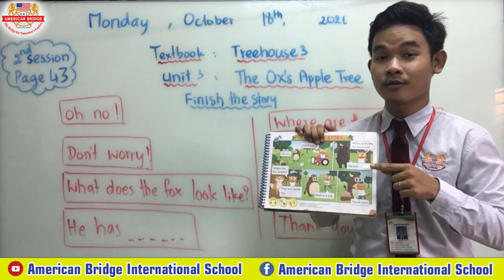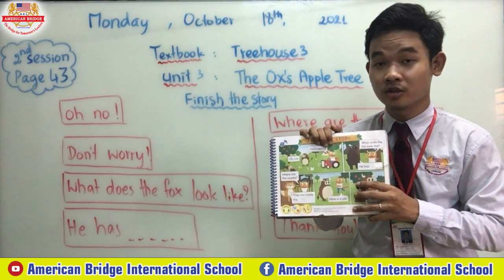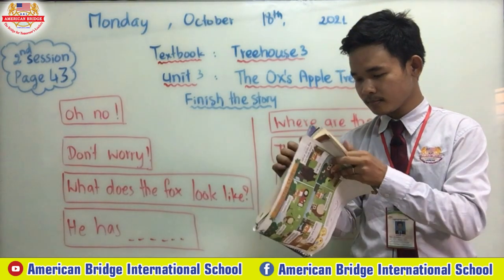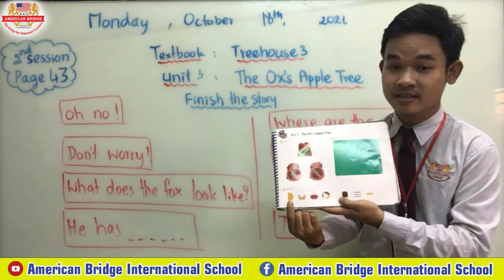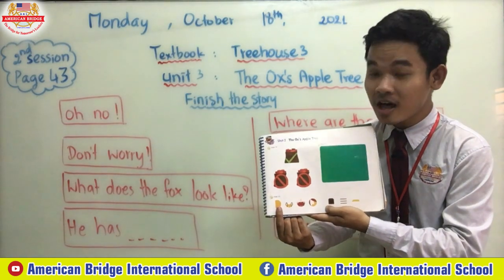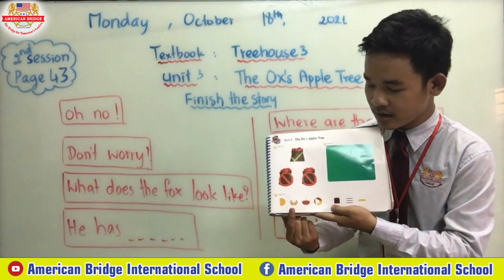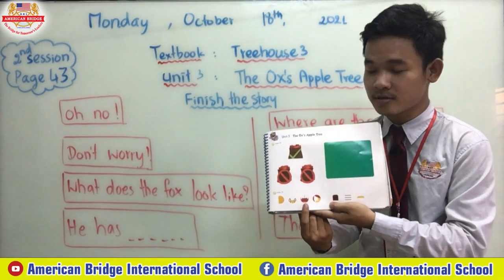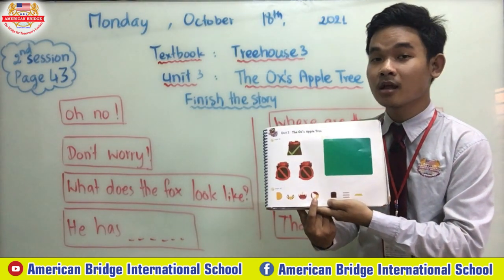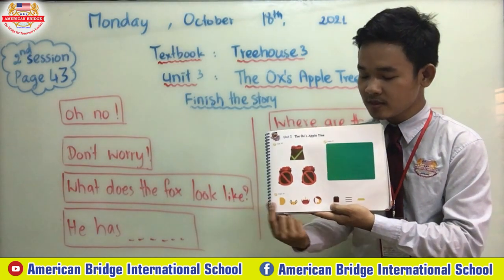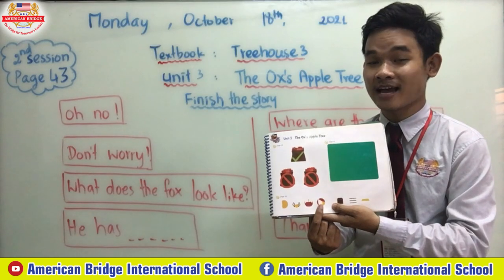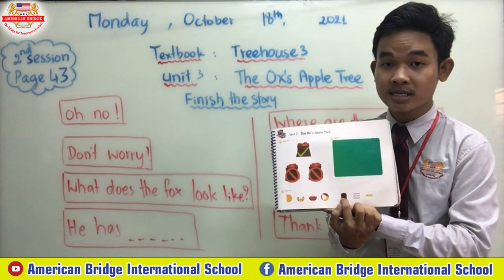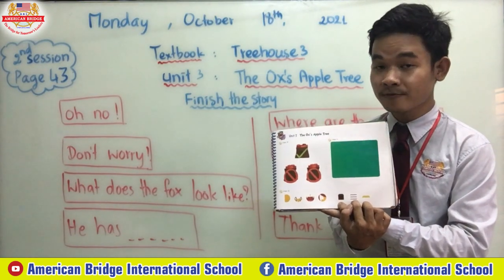Now teacher will play this track for you. Don't forget to add the stickers when you listen. You can find the stickers over here — let teacher show you. We have: long orange fur, short black ears, long white teeth, and long orange tail. These describe the look of the fox. When you listen to the track, don't forget to add the sticker.